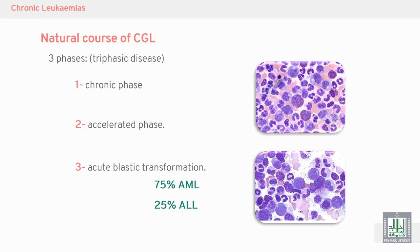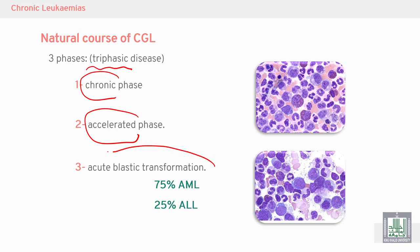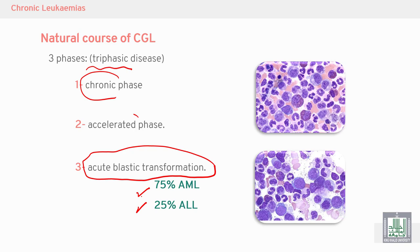Chronic myeloid leukemia, or chronic granulocytic leukemia, is a triphasic disease. It starts with the chronic phase, then progresses to the accelerated phase, and finally to blast crisis or acute blast transformation — either AML or ALL. Most cases will transform to AML, acute myeloid leukemia.